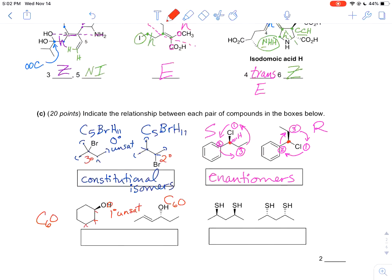One, two, three, four, five, six, seven, eight, nine, ten, eleven, twelve. So one degree of unsaturation. One, two, three, four, five, six, seven, eight, nine, ten, eleven, twelve. So always good to double check. But these two definitely different connectivity. They are constitutional isomers.